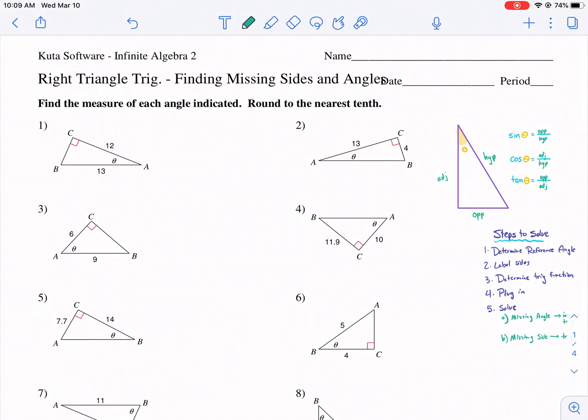Welcome everyone to West Explains Best. Today we are going to be taking on a CUDA worksheet tutorial called Right Triangle Trig, Finding Missing Sides and Angles. This is a really good exercise, one that I really like because it talks about every type of possible question you're going to get using trigonometry.